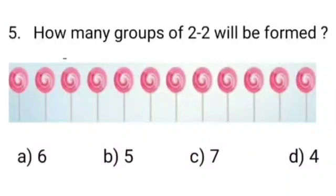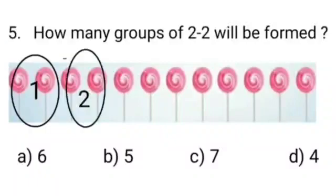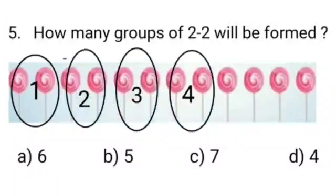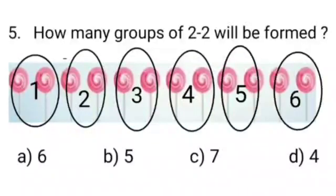Here we can see some lollipops. Let's start making their groups. 1, 2, 3, 4, 5, 6. Like this, when we formed group of 2-2 of these given lollipops, then total 6 groups were formed, which is our option A. So we will put tick on option A.